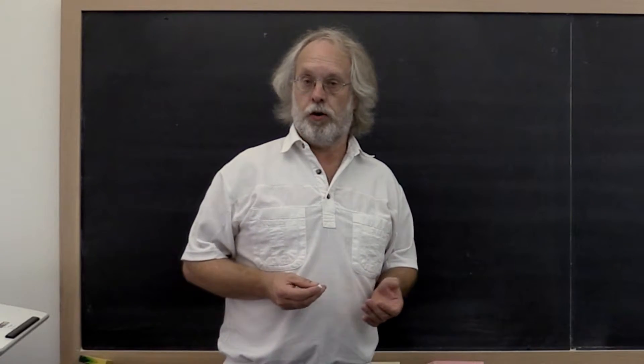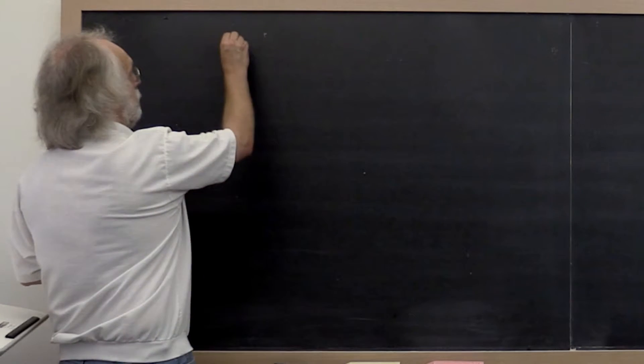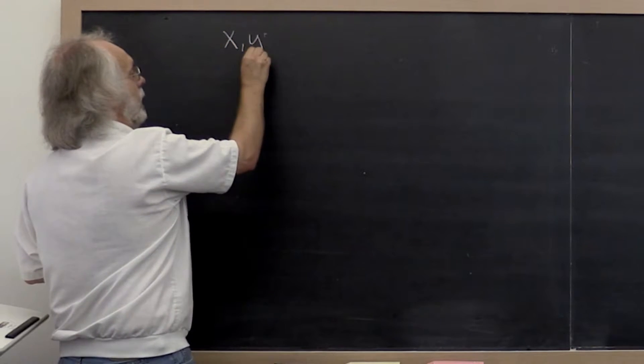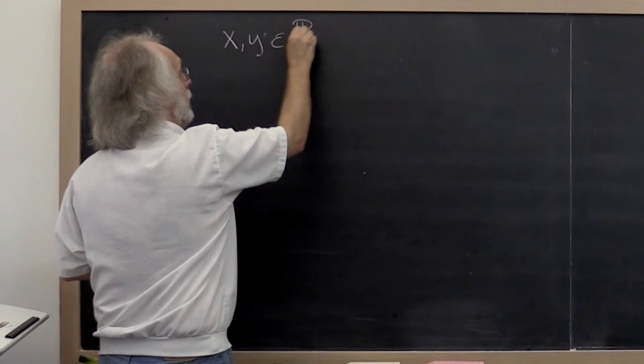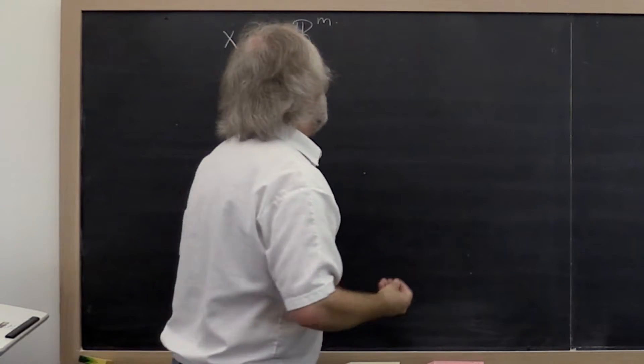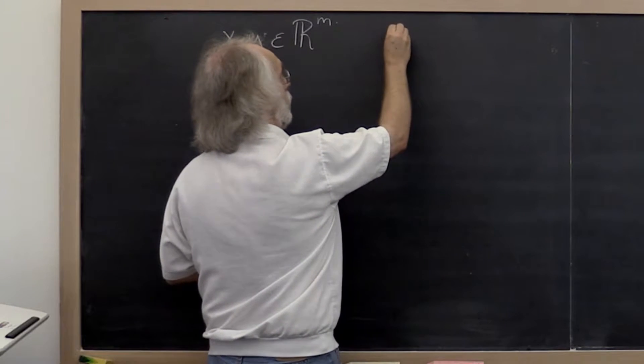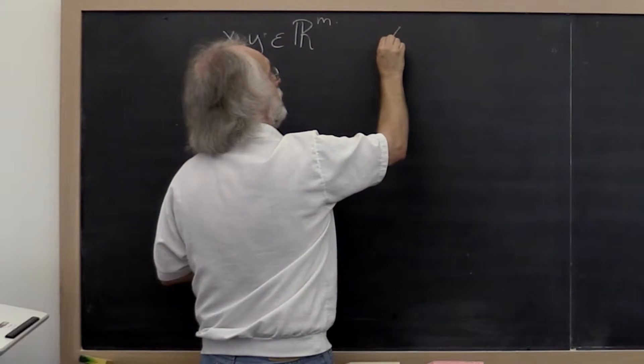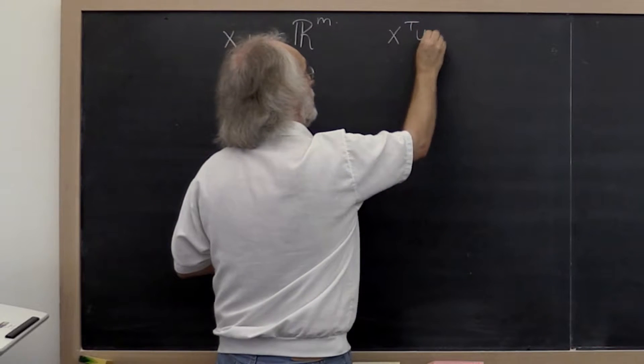Let's quickly revisit orthogonal vectors. If we have two vectors x and y in R^n, then at some point you learned that these two vectors are orthogonal or perpendicular if x transpose y is equal to 0.